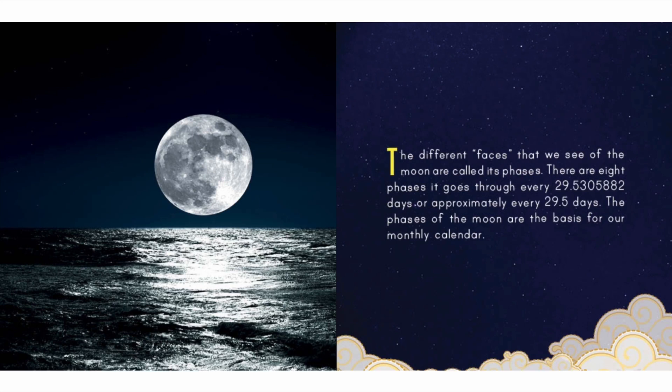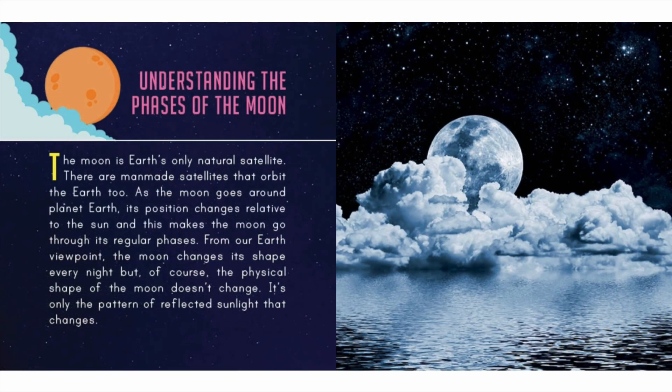The phases of the moon are the basis for our monthly calendar. The moon is earth's only natural satellite, though there are man-made satellites that orbit the earth too. As the moon goes around planet earth, its position changes relative to the sun, and this makes the moon go through its regular phases.